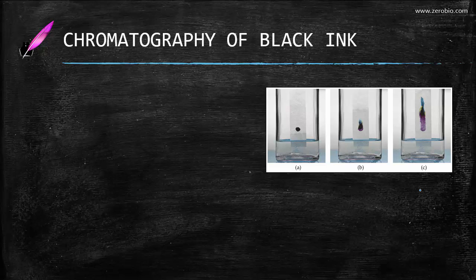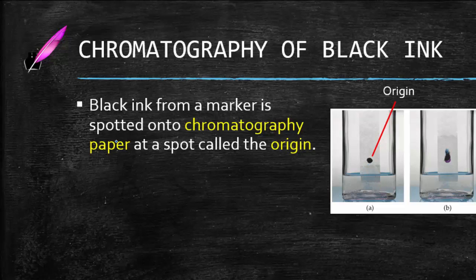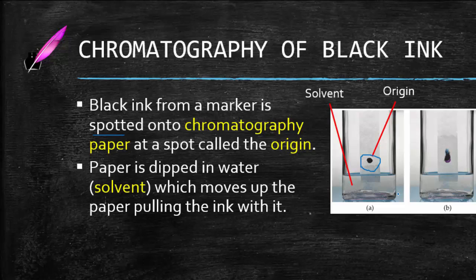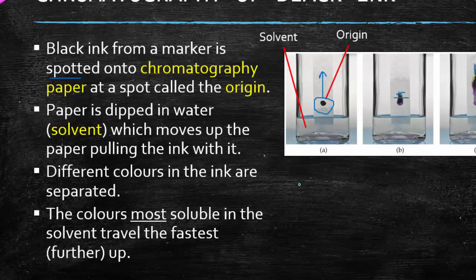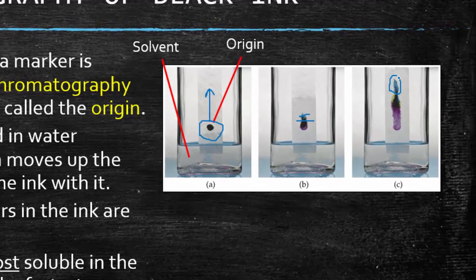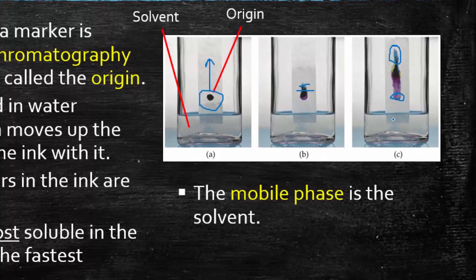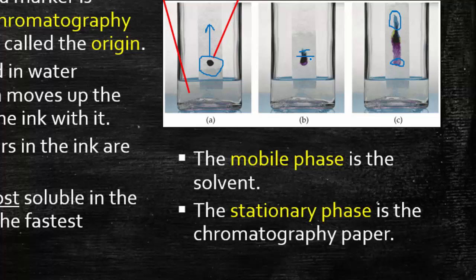Recall doing this experiment in elementary school: taking some black ink and putting it in water and having it separate into different colors. Black ink from a marker can be spotted on — this is the term we use, spotting a chemical onto the chromatography paper. The place at which you spot it on is called the origin. The paper is going to be dipped into a solvent, a liquid that's going to pull the pigment up. The solvent is the mobile phase and it's going to pull the ink up. As you can see, it's starting to separate out into different colors. The colors that are most soluble in the solvent will travel the fastest and furthest up. This blue color is the most soluble and the pinkish or purple color down here is the least soluble. The mobile phase is the solvent and the stationary phase is the chromatography paper.